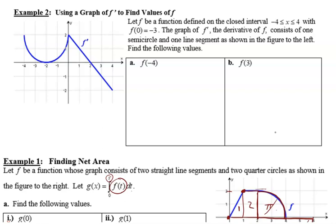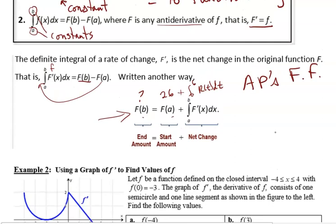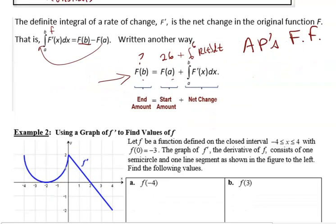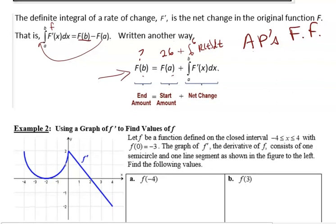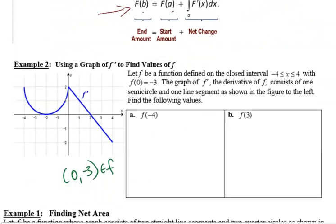We have the graph of f prime. We also know that f of 0 equals negative 3, so we have a point on the original function at (0, -3). We can use the second part of the fundamental theorem. We have a starting value at 0, and then we can use f prime as an accumulation function to find a new value. It's like we have a starting value and a rate function and we can accumulate that to figure out the ending value. I'm going to use this AP's favorite formula rearrangement of the second part of the fundamental theorem: f of 3, the after amount.